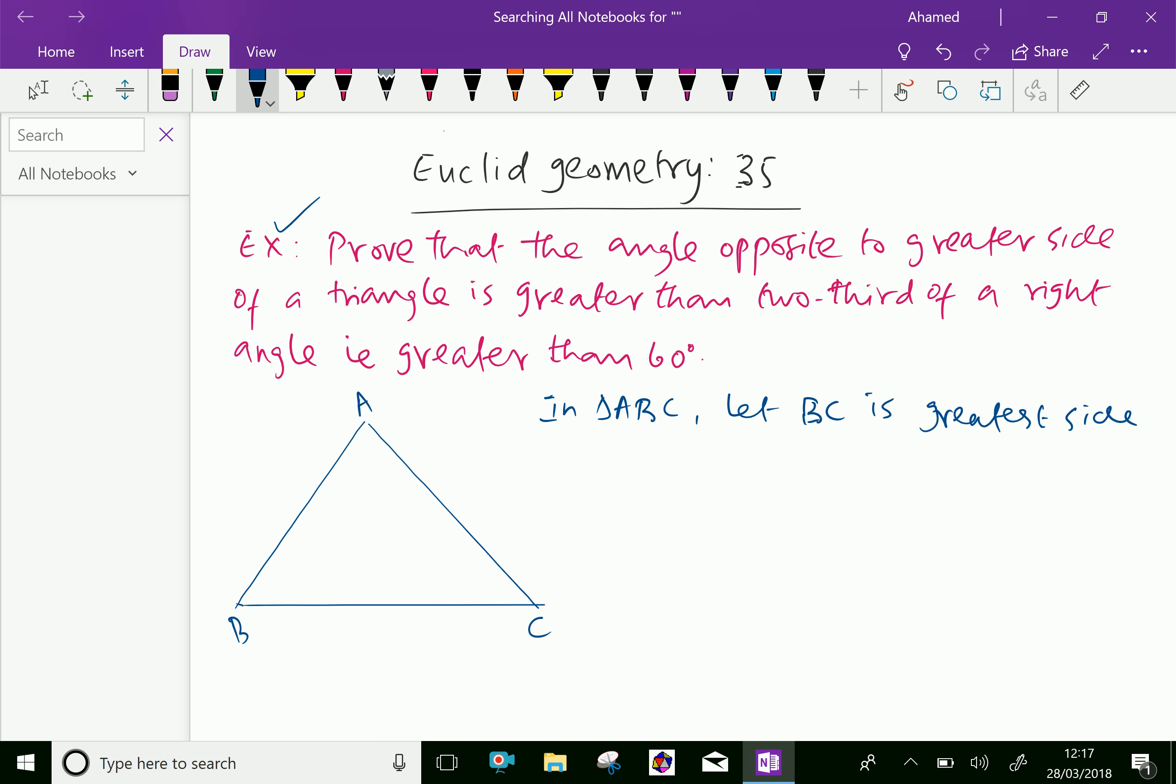Then you can say BC is greater than AB. Therefore, angle A is greater than angle C. The reason is that the angle opposite to the greater or longer side is larger.